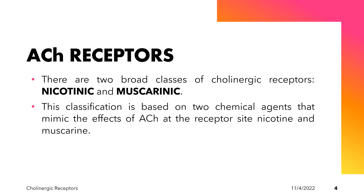Nicotine, just like acetylcholine, is a nicotinic receptor agonist. In the sympathetic ganglia and skeletal muscle, nicotine will mimic the stimulatory actions of acetylcholine; these are called nicotinic actions, and the receptors involved are the nicotinic cholinergic receptors. Muscarin is responsible for the toxicity of the toadstool. Muscarin will mimic the stimulatory action of acetylcholine on smooth muscle and glands — these are called muscarinic actions, and the receptors involved are muscarinic cholinergic receptors.